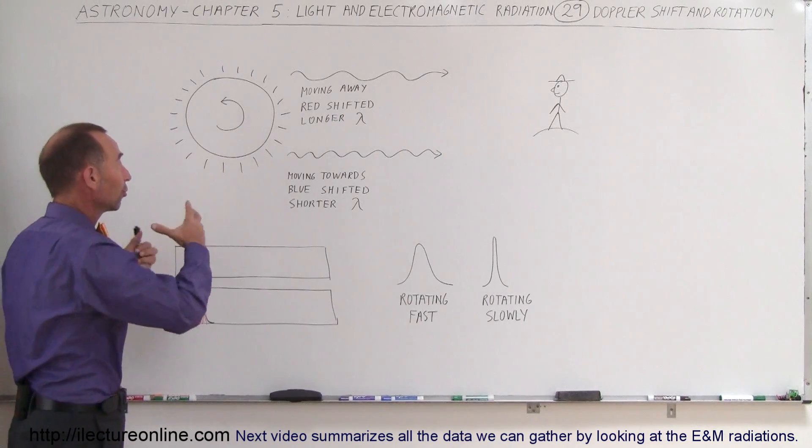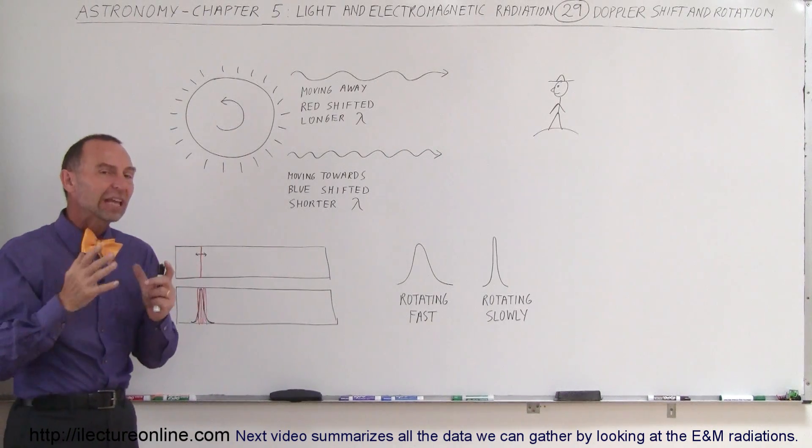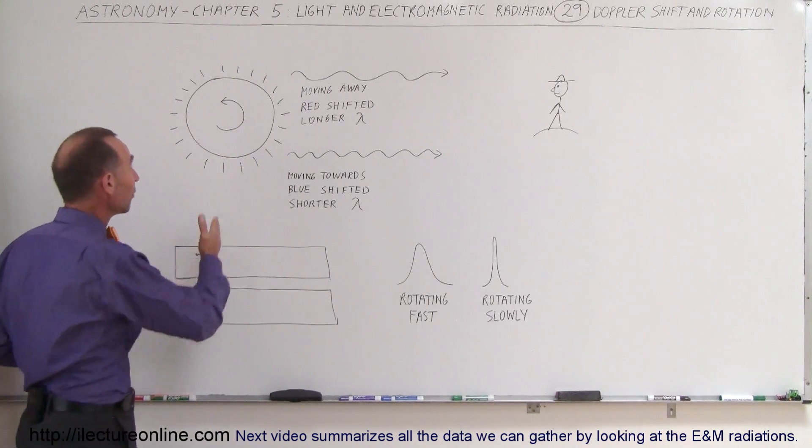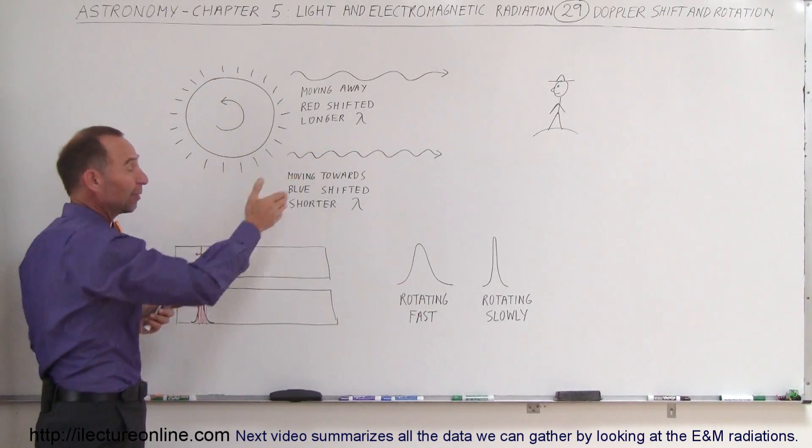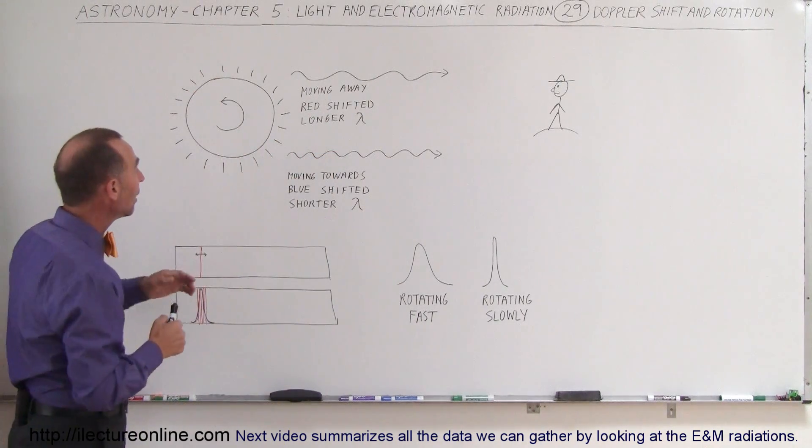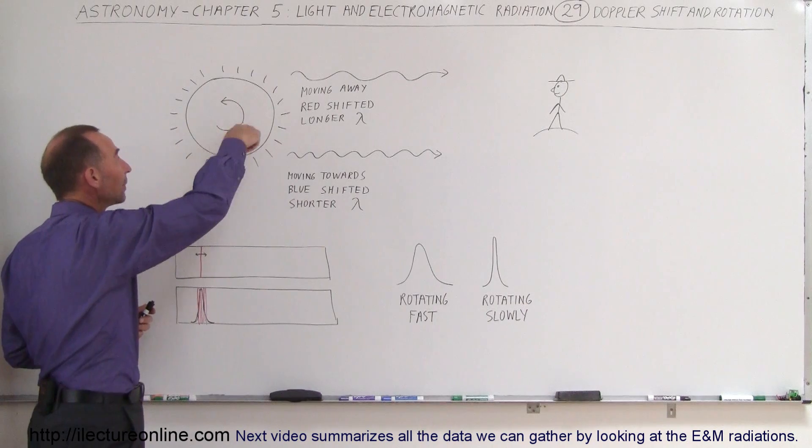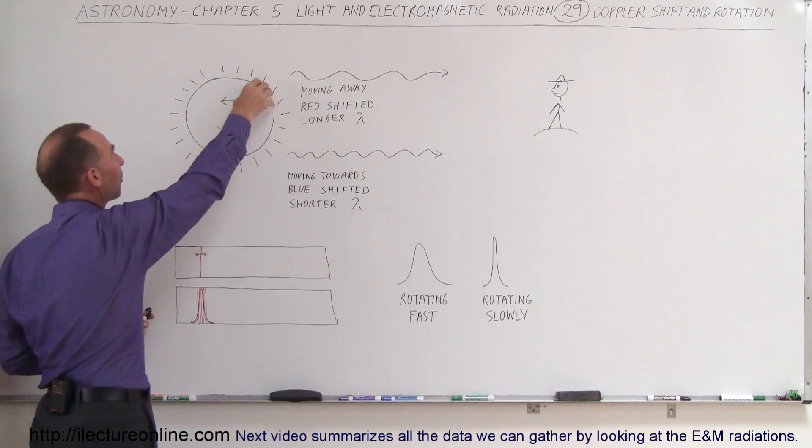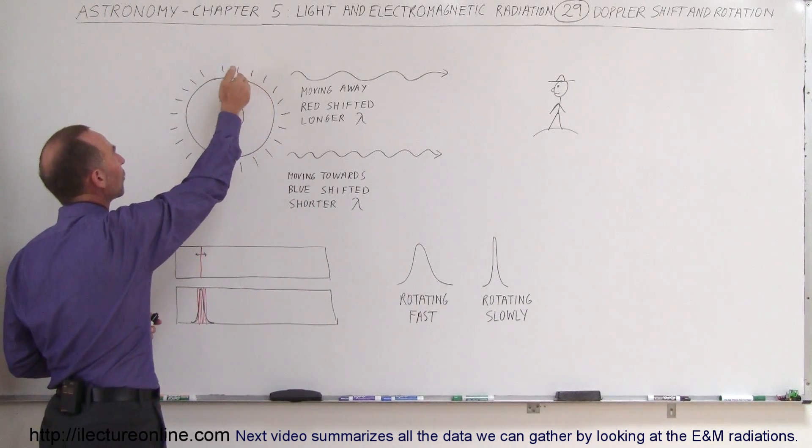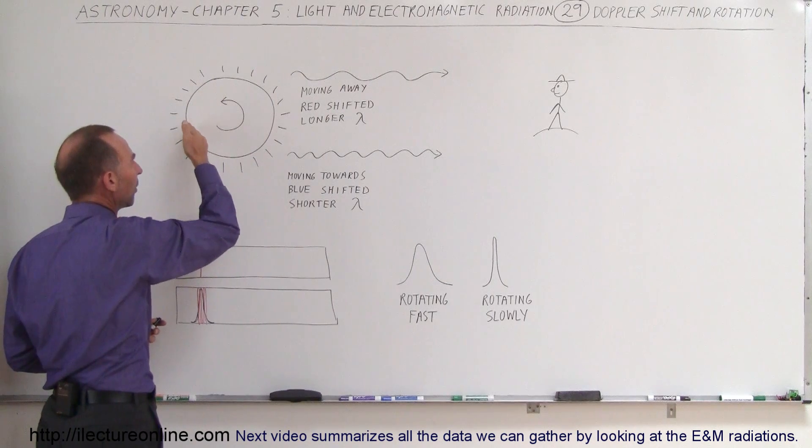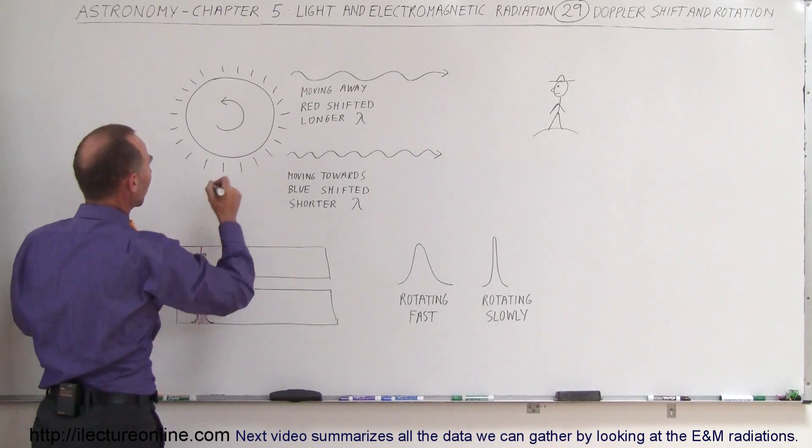Let's say we have a star right here that we're observing, and let's say that it's stationary relative to us. It may be moving up or down relative to us, but we can't see that Doppler shift anyway. But it is rotating, and because it's rotating, the top portion of the star appears to be moving away from us and the bottom part of the star appears to be moving towards us.